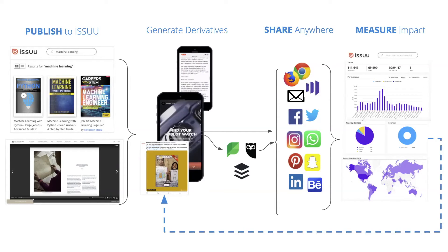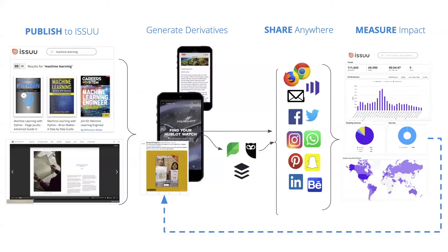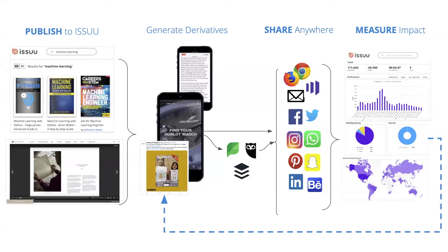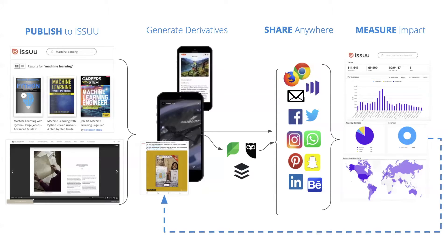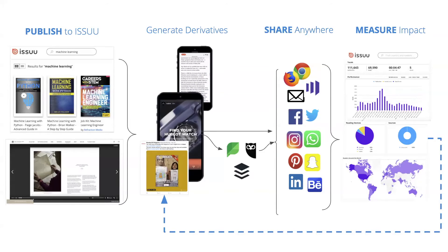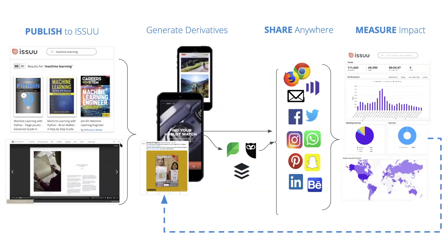Another thing we're really proud of for measuring engagement is our Alexa score. We are within the top 500 websites on the internet in terms of our Alexa ranking, which shows that we have a pretty engaged audience who spends a good amount of time reading content on our website. With our search engine optimizations combined with your created content, you can really easily get great audience impressions and reads from your content posted to Issue.